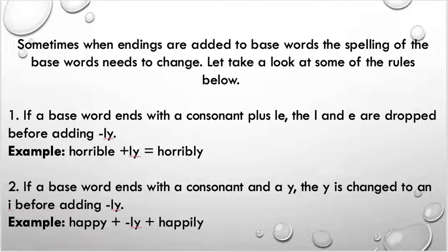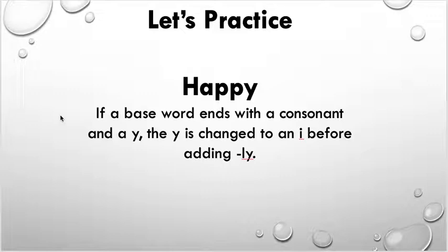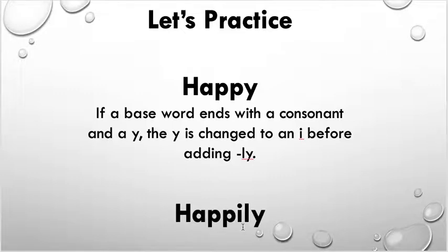Let's practice with some words. Let's try the word 'happy.' Remember the rule about a word ending with a consonant and 'y': if a base word ends with a consonant and a 'y,' the 'y' is changed to an 'i' before adding '-ly.' See if you can think of how we would change the spelling of this base word before adding our suffix '-ly.' If you changed your 'y' to an 'i' and added '-ly,' you are correct.